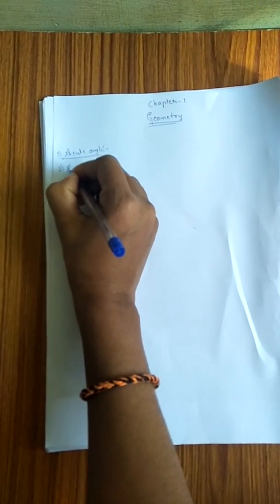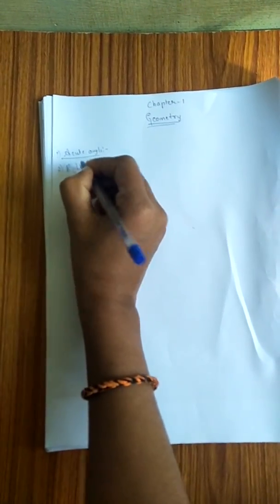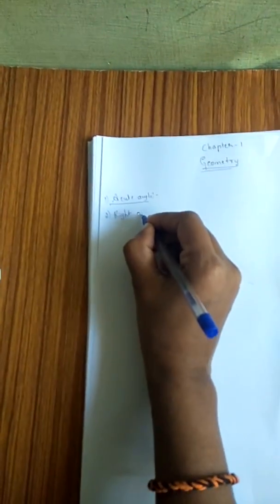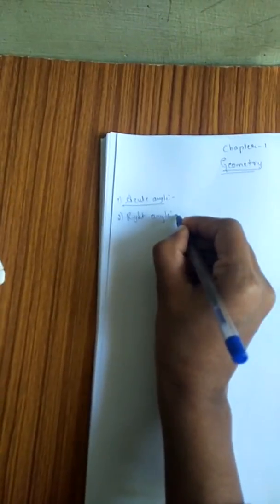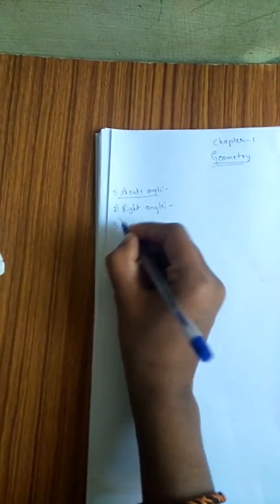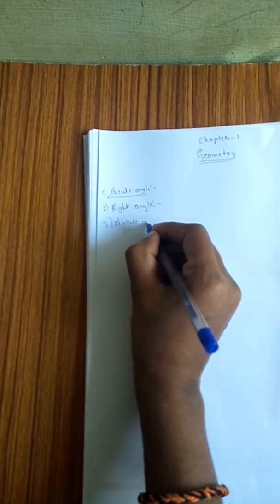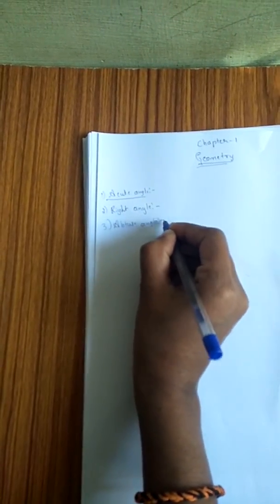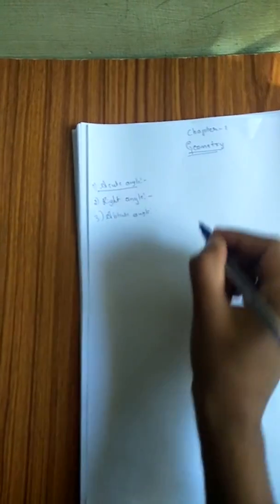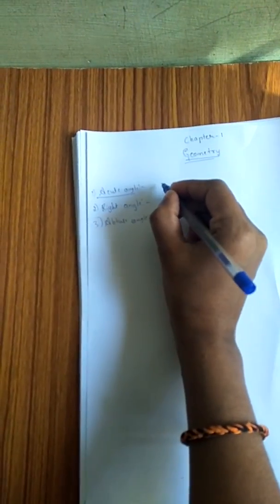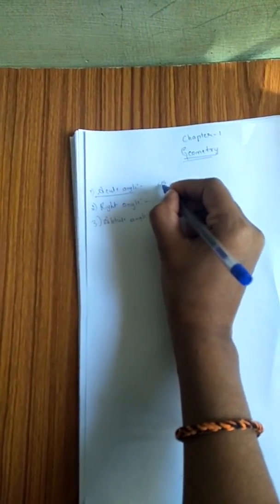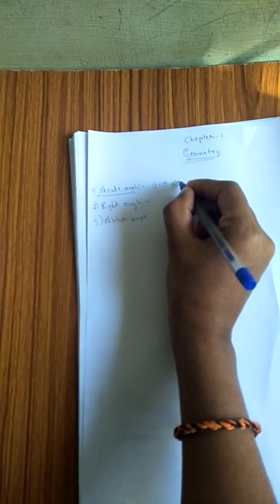Second one is right angle. Third one is obtuse angle. Acute angle means theta lies between 90 to...